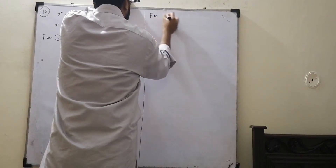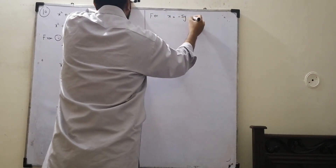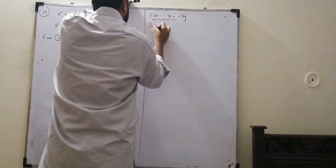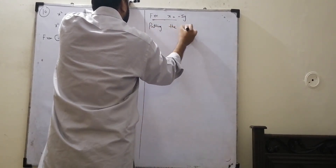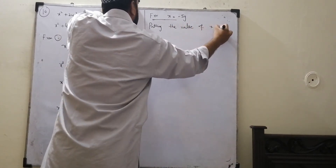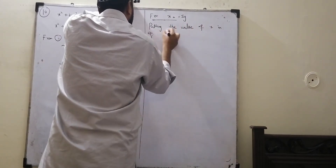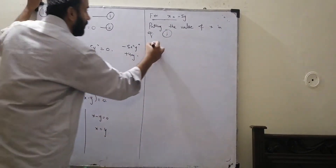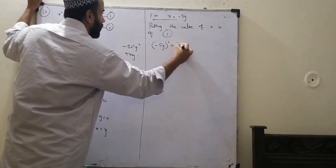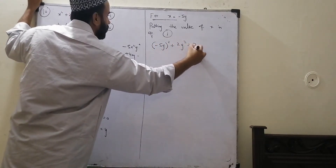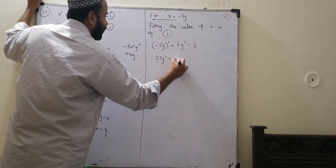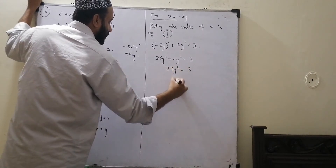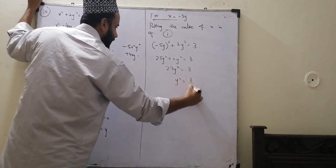For x is equal to minus five y, we are putting the value of x into equation number one. We now have minus five y, whole squared, plus two y squared is equal to three. It becomes 25y squared plus 2y squared is equal to 3, and then 27y squared is equal to 3.